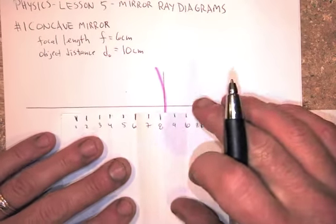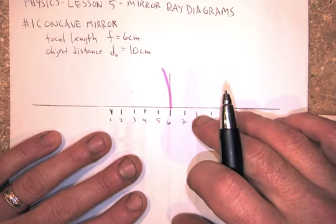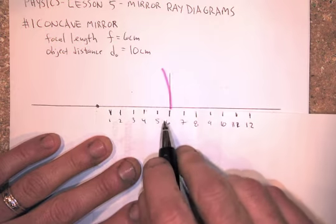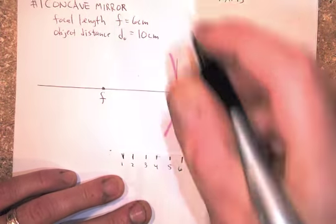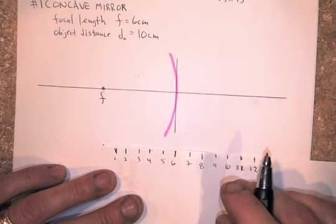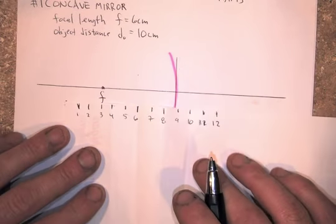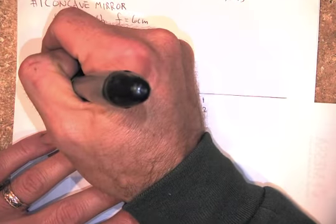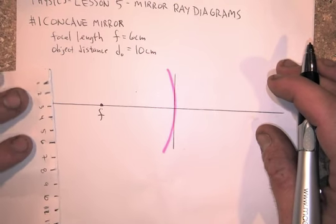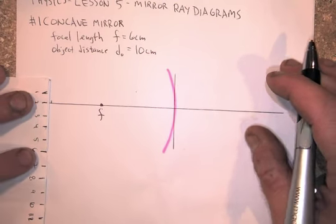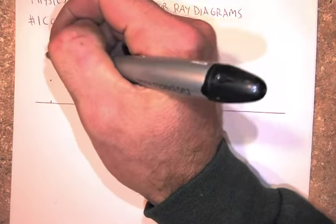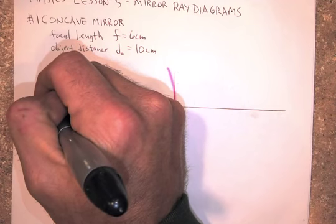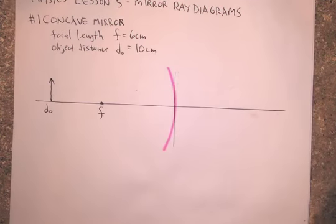F is at 6. So I'm going to measure 6 whatever's. These are supposed to be centimeters, but whatever units you got is fine. I'll put a dot there. 6 away from the mirror. That's F. The object is at 10 in front of the mirror. It'll always be on the left side here for the object. So I'm going 10. The height of the object is irrelevant. It doesn't really matter. I'm just going to make it 2 centimeters tall. So for the object, we just draw an arrow. This is our object. So it'll say DO.